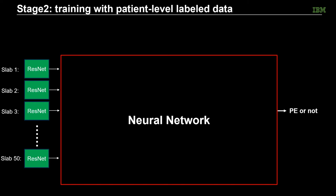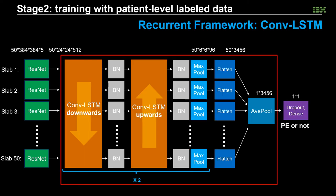We have 50 image slabs processed by the pre-trained ResNet, and we need another network to aggregate the data and provide overall PE prediction for an image volume. To account for spatial context between the image slabs in a volumetric image, we use a recurrent framework. Specifically, we use a bidirectional convolutional LSTM to interpret and summarize the patterns among correlated samples. The LSTM modules were applied twice. Then an average pooling layer was used to integrate the features along the z-axis. At the end, a fully connected layer summarizes the results and provides PE prediction.